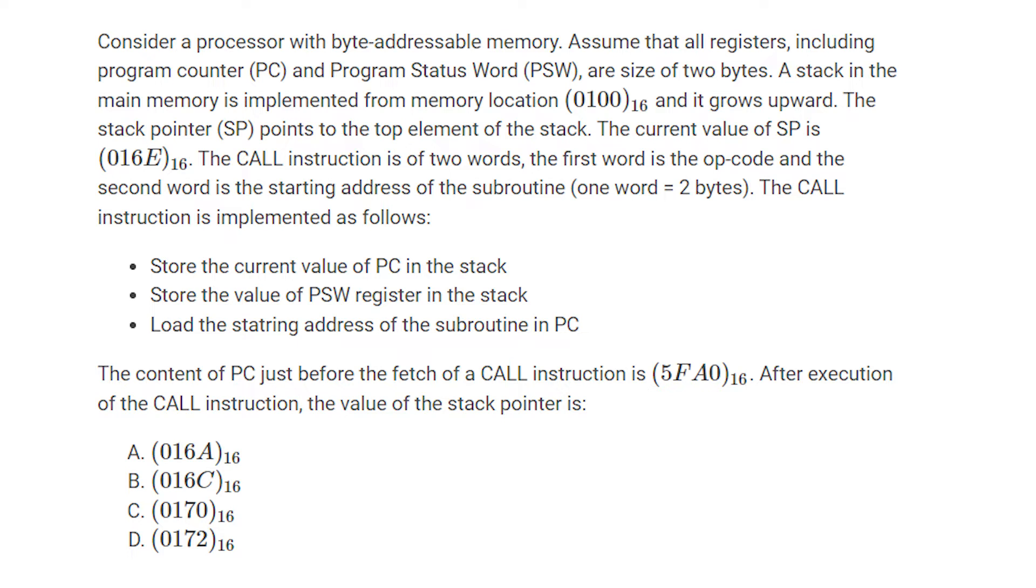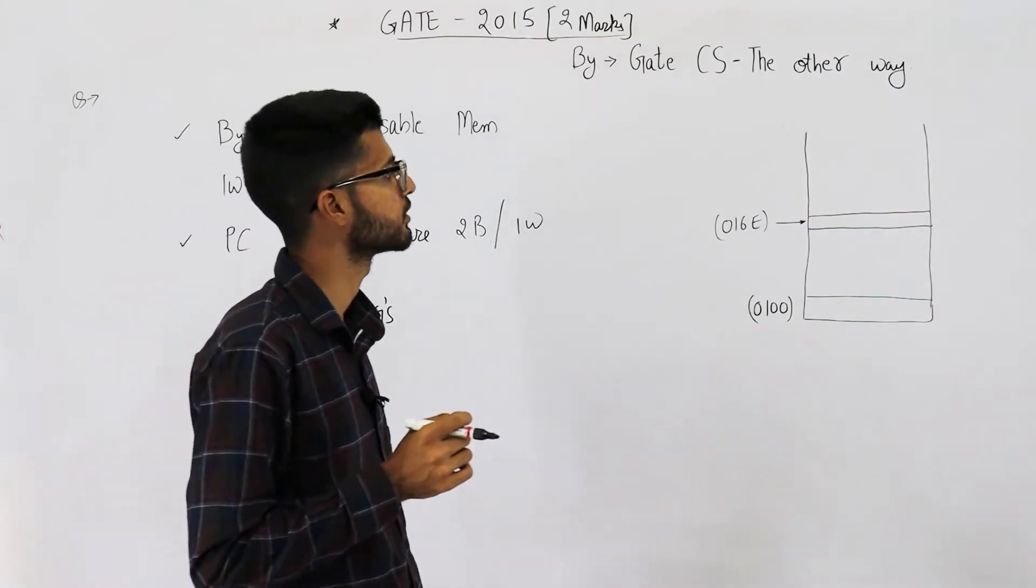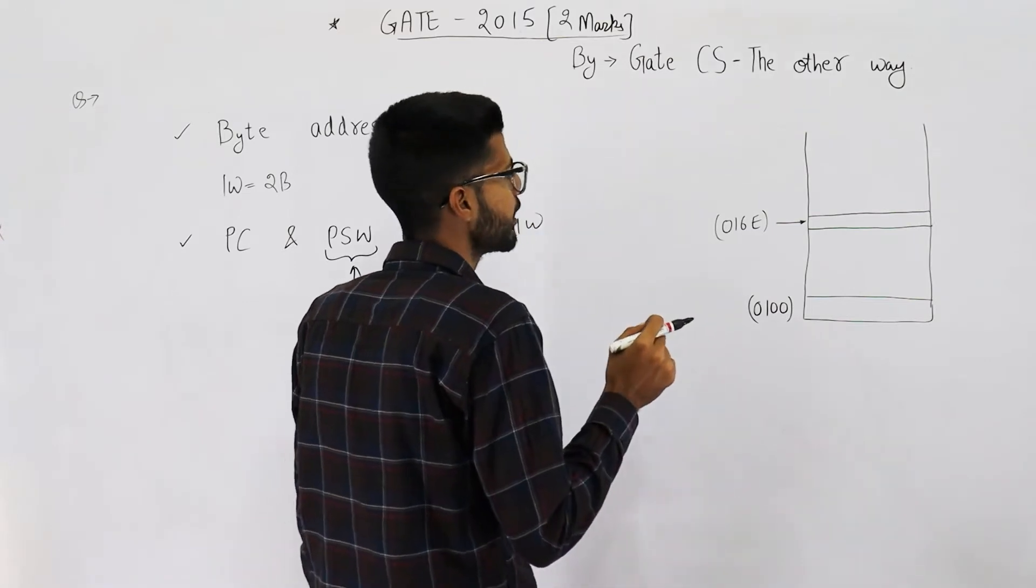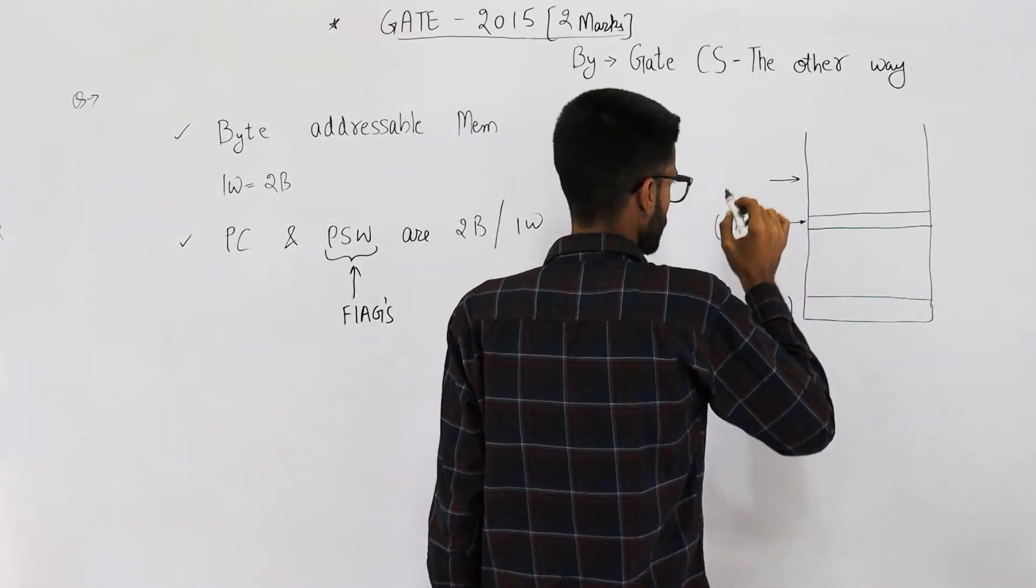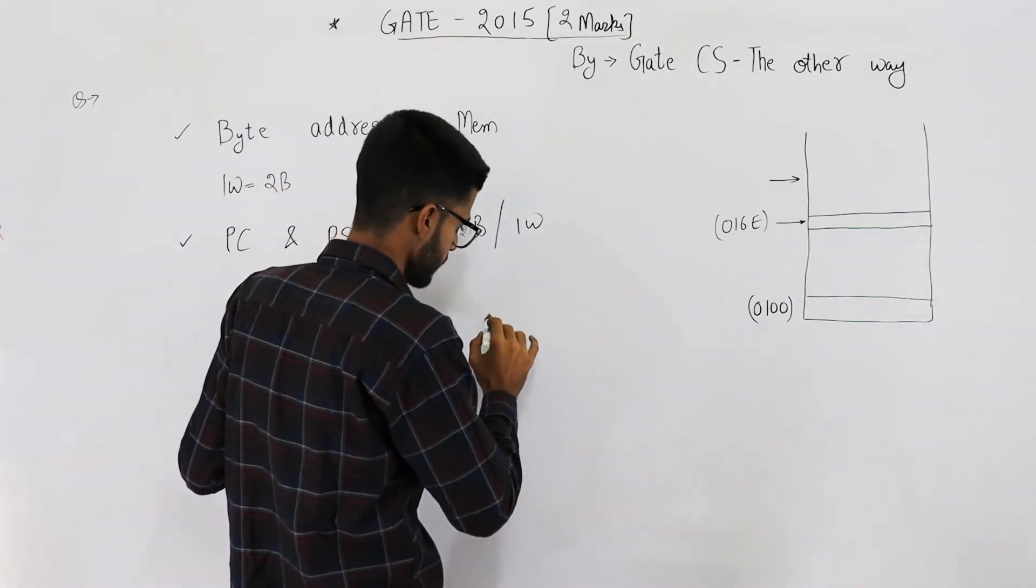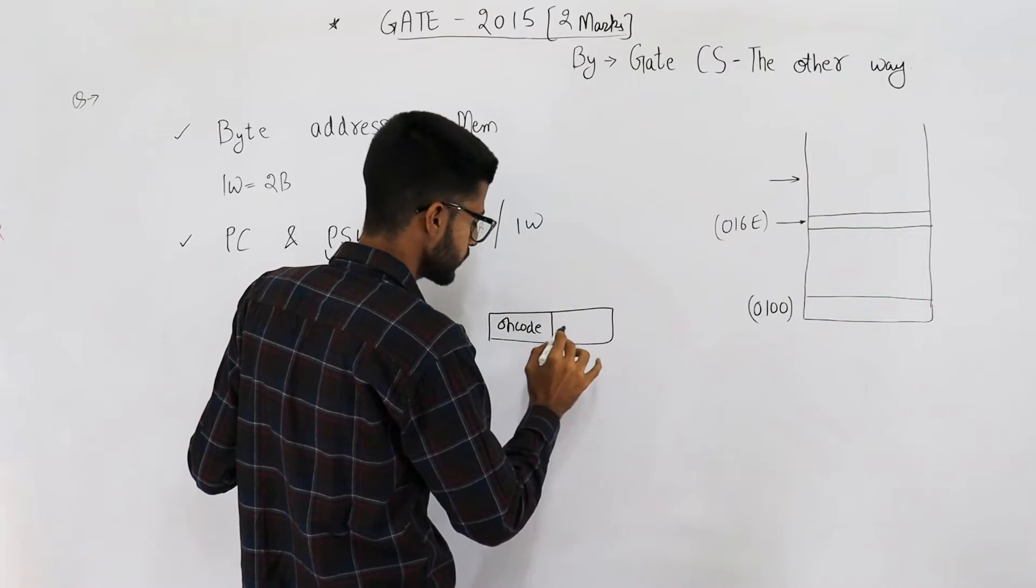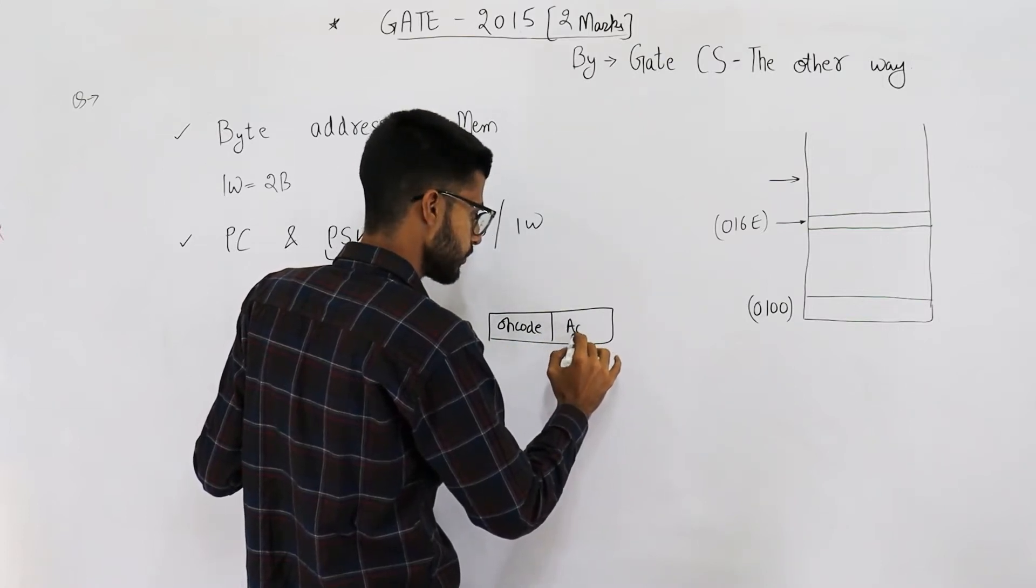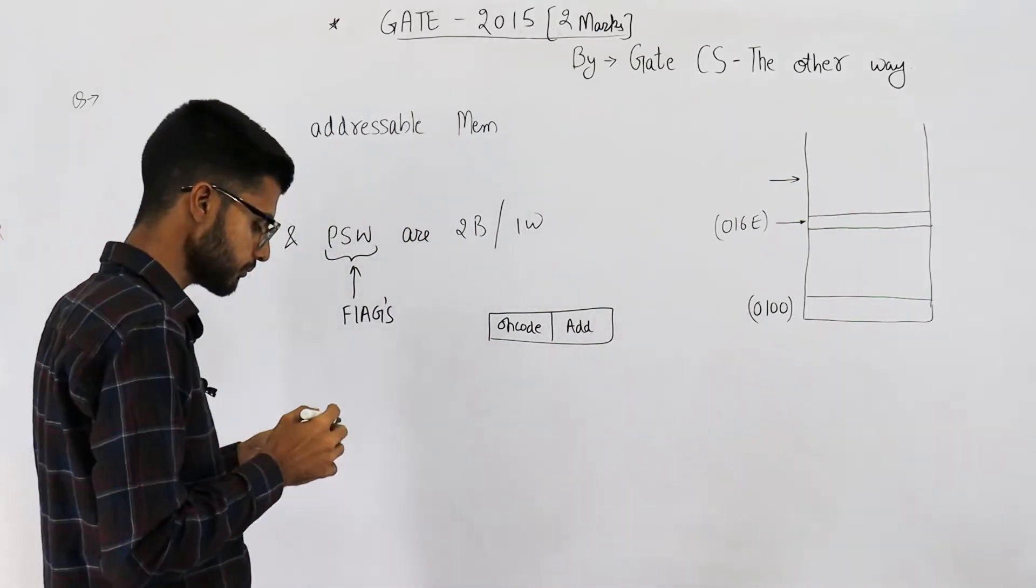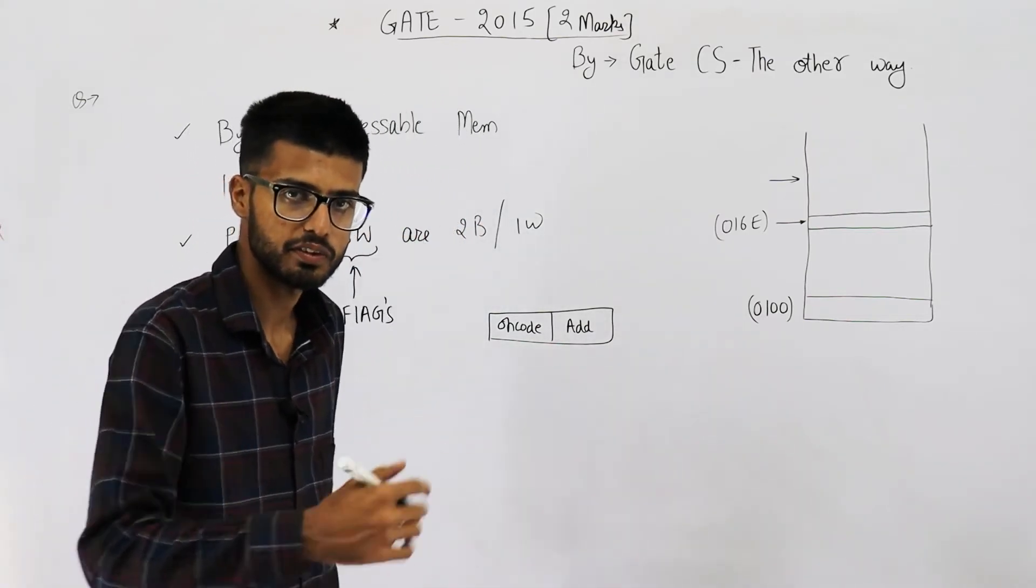The value of stack pointer, that means to what address is this going to point. Whenever we make a call instruction, call instruction is of two words. First word is opcode and second one is the address or jump address. Now this address has to be loaded in program counter because we need to fetch that instruction. But doing so will lose the contents of program counter.